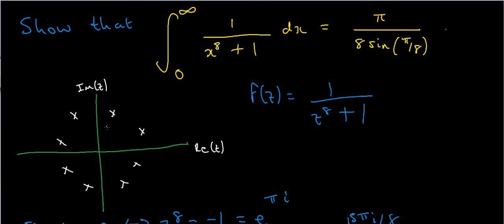In my other contour integration videos I usually used a semicircular contour. But I've got 8 different poles here, and even a semicircle would require calculating 4 different residues — computationally very tedious. If you had something like z to the 100 plus 1 in the denominator, you'd be calculating 50 residues by hand. So there's got to be a better way, and there is: instead of a semicircle, I'm going to use a sector contour.